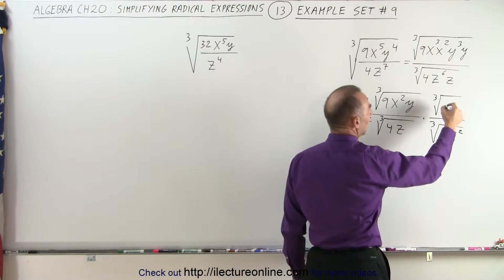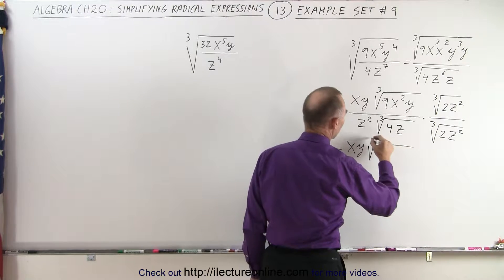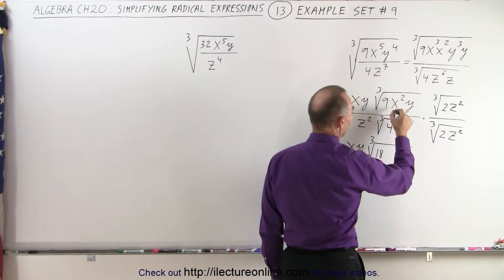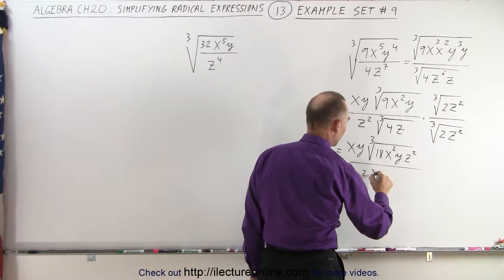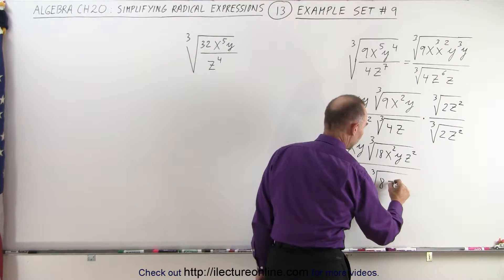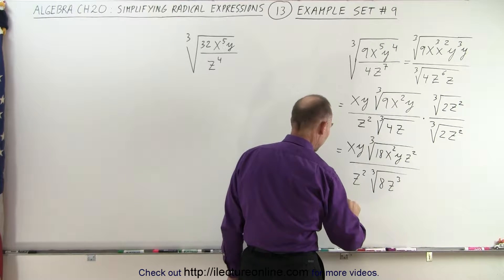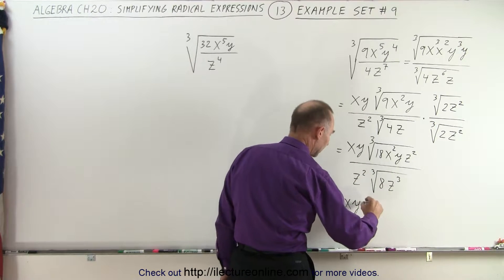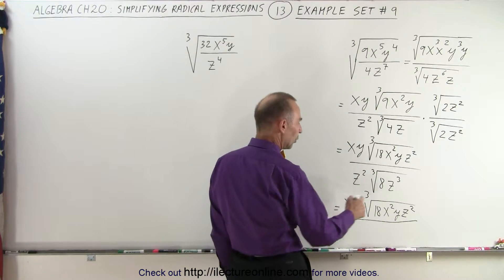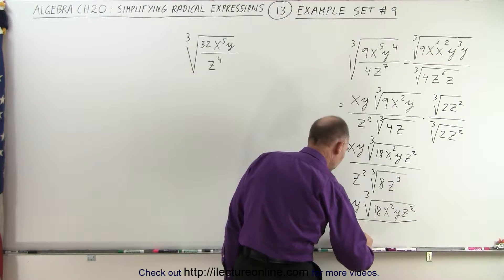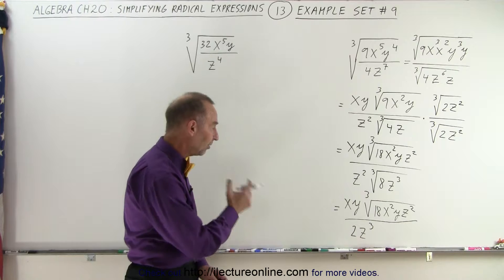So whatever I multiply the denominator with, I must multiply the numerator as well. So this looks like x times y times the cube root of 9 times 2, which is 18, x squared, y, and z squared. In the denominator, I end up with z squared times the cube root of 4 times 2, which is 8, and z times z squared, which is z cubed. You can see that I can now simplify this — the numerator stays as x times y times the cube root of 18x squared y z squared. In the denominator, I can pull out a 2 and one more z, so this becomes 2z squared. So I get rid of the radical in the denominator, and that's as simple as I can write it.